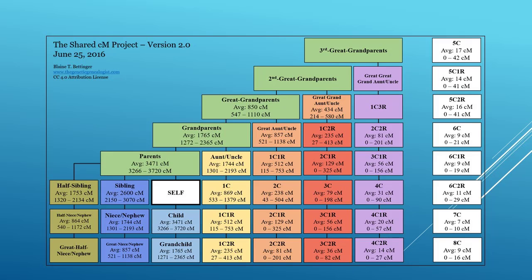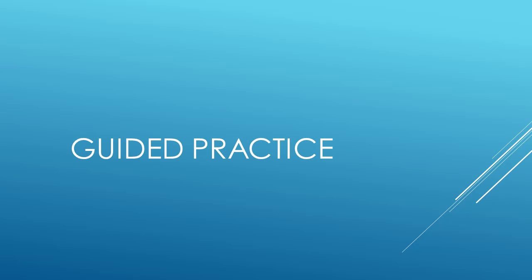Please note: the letter C represents cousin and the letter R represents removed. For example, the child of your great-grand-aunt or uncle would be your first cousin twice removed. Now that we've reviewed the basics, let's practice using centimorgans to understand familial relationships.